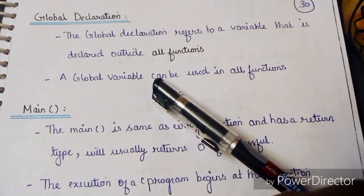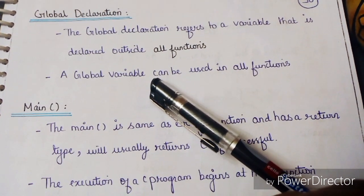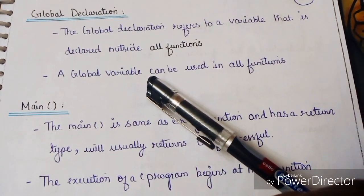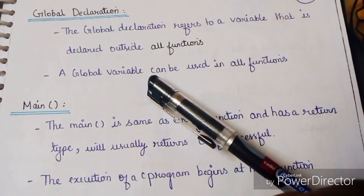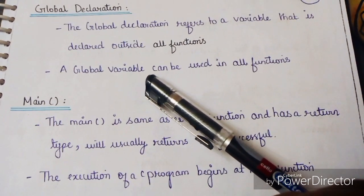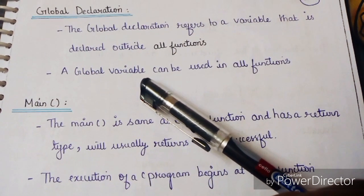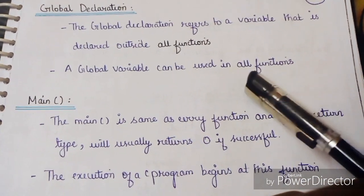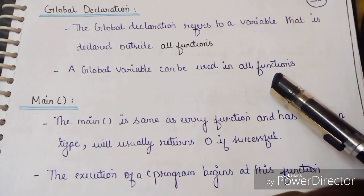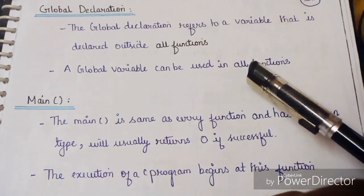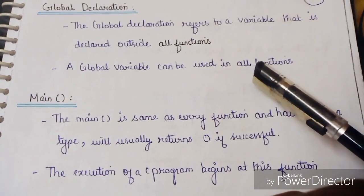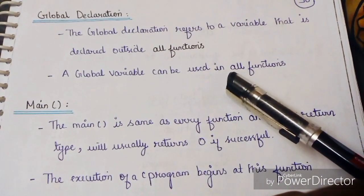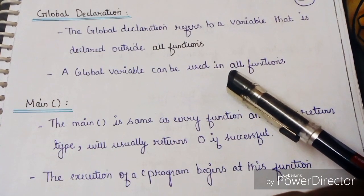The global variables are used in all functions. Any type of variable added in the global declaration section can be accessed and used across all functions in the program. This is the purpose of the global declaration section.